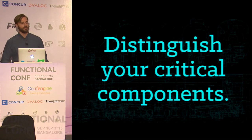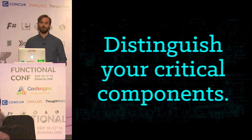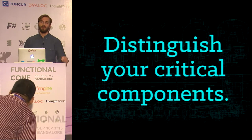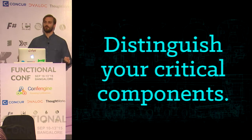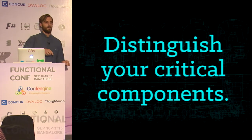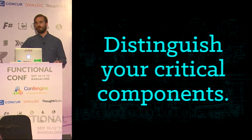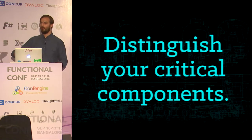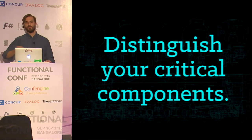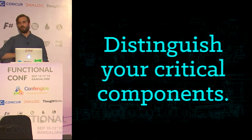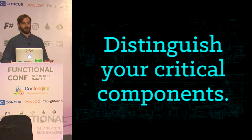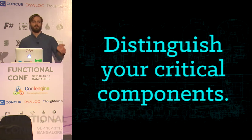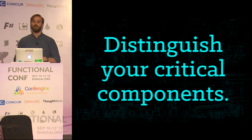Distinguish your critical components. When designing the system, you have to know that some components cannot fail — or if they do, there will be severe degradation, so you need more elaborate monitoring and testing. Then some systems like an email sender that aren't life-critical — if they go down, if they blink on and off for a while, that's not such a bad deal. You have to have these different levels of trust and different levels of criticality.